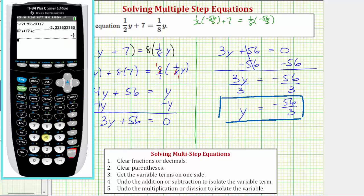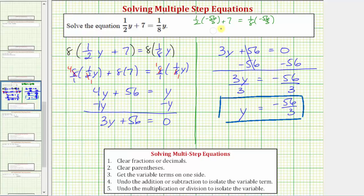And on the right we have ⅛ × -56/3, enter, math, enter, enter. Both sides of the equation are equal to -7/3 when y = -56/3, which verifies our solution. And the left side is equal to the right side when y = -56/3, verifying our solution is correct.